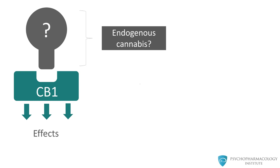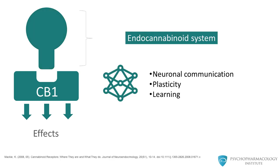If a receptor for a drug like THC exists in the body, there are likely to be natural cannabis molecules as well. These were soon discovered. The brain has a natural inbuilt cannabinoid system, or endocannabinoid system. Since then it has become clear that the endocannabinoid system is involved in neuronal communication, plasticity, and learning in neuronal networks.